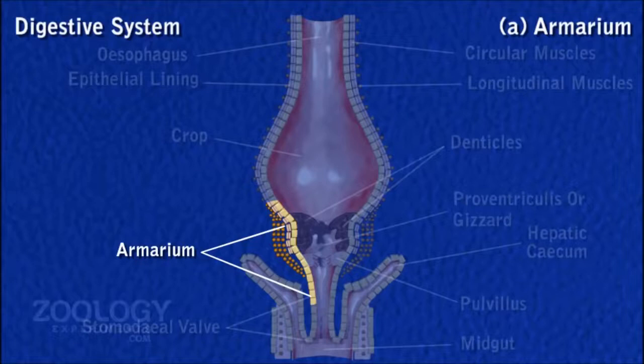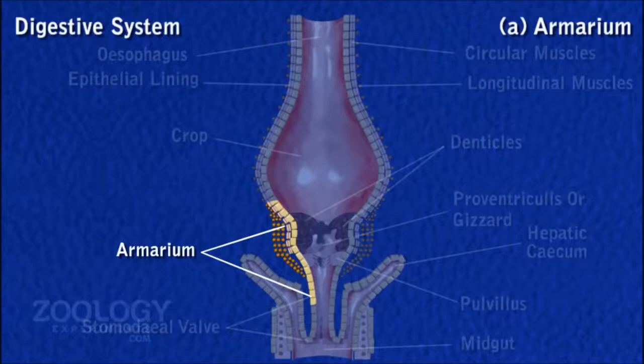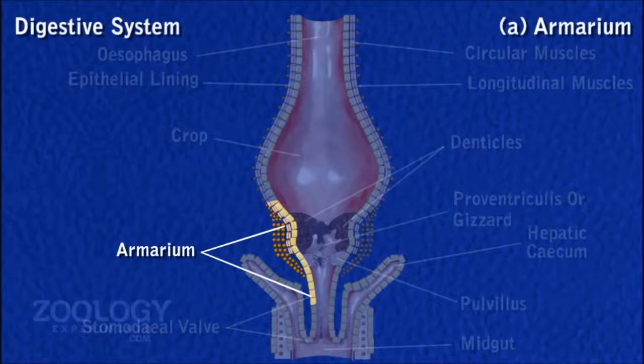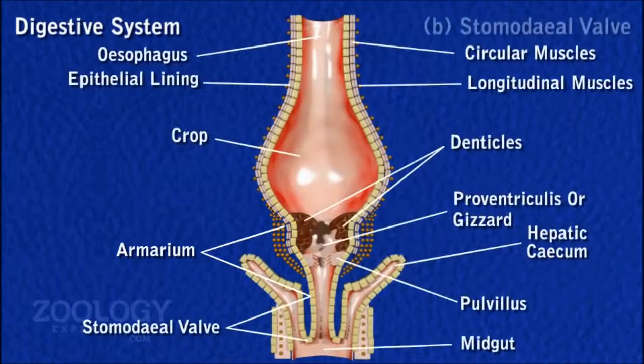The cuticular lining of each longitudinal fold forms, in the anterior part, a thick plate produced centrally into strong sharp teeth, and in the posterior part, a thin plate behind each longitudinal fold. The cuticular lining of the gizzard forms a soft cushion-like lobe with long backwardly directed hairs, which act as a strainer and allow only finer food particles to pass into the mid-gut.